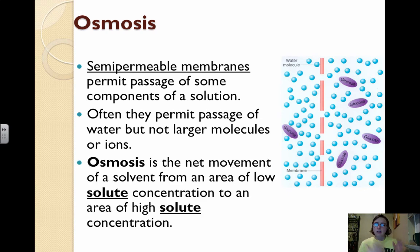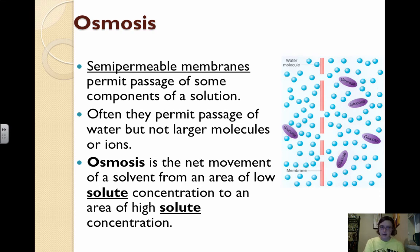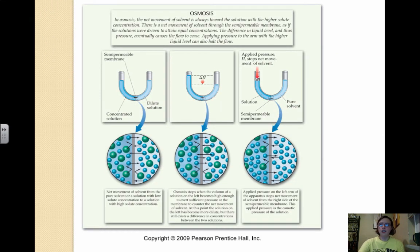Osmosis is the movement of a solvent from an area of low solute concentration to high solute concentration. Essentially, we're trying to equalize concentration — moving solvent to where there's high solute to dissolve more of it. In relation to the solvent, there would be movement from high solvent to low solvent. You have to think about whether you're focusing on the solute or the solvent. This picture shows osmosis, the net movement back and forth.